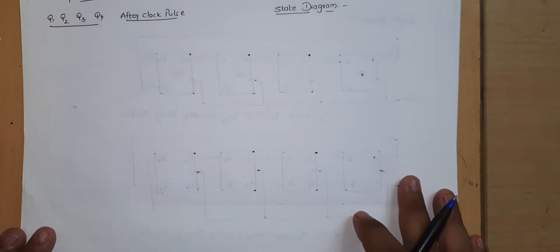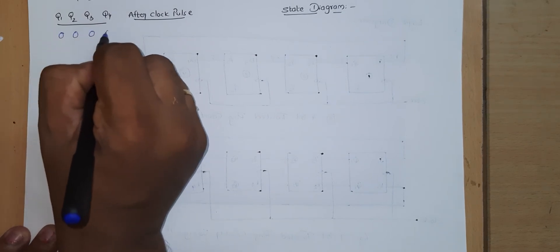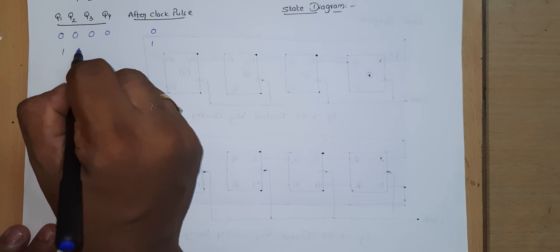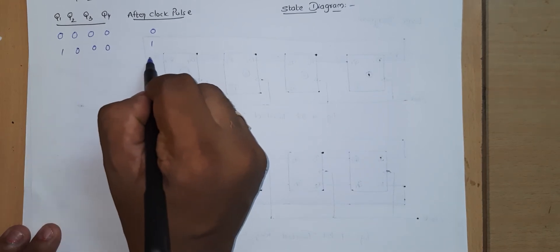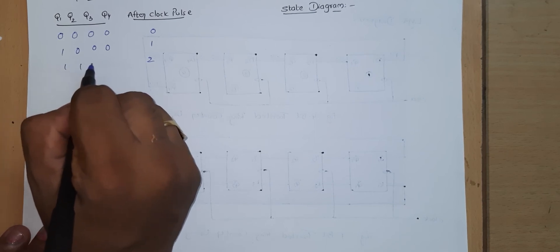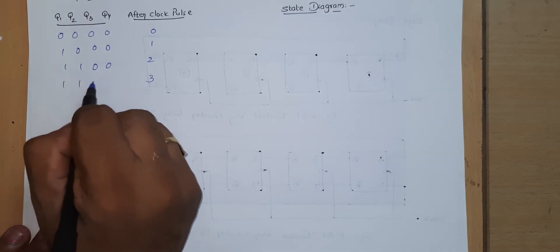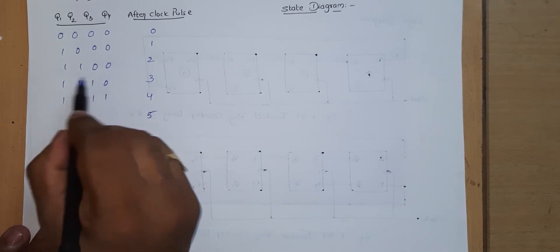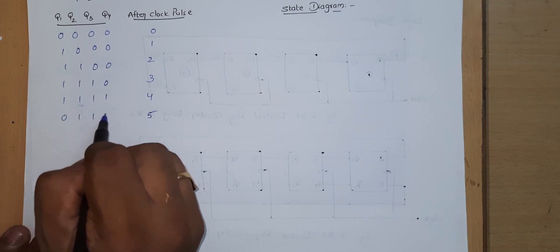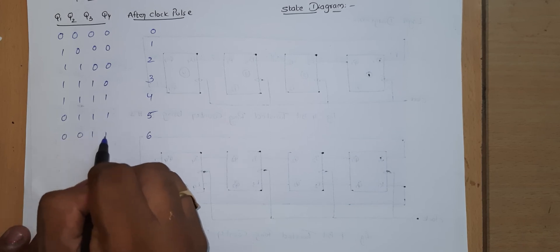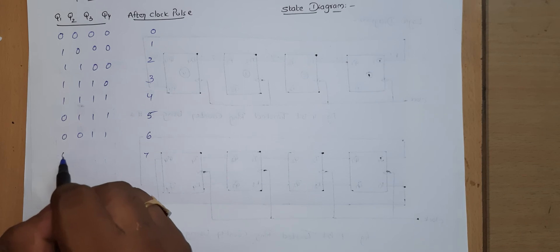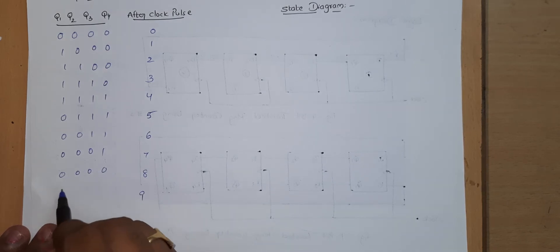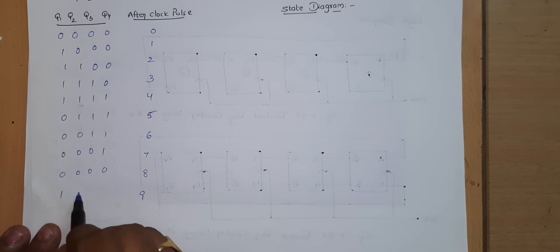Let us rewrite the sequence table. Initially at clock pulse 0: Q1=0, Q2=0, Q3=0, Q4=0. After clock pulse 1: Q1=1, Q2=0, Q3=0, Q4=0. After clock pulse 2: Q1=1, Q2=1, Q3=0, Q4=0. After clock pulse 3: Q1=1, Q2=1, Q3=1, Q4=0. After clock pulse 4: Q1=1, Q2=1, Q3=1, Q4=1. After clock pulse 5: Q1=0, Q2=1, Q3=1, Q4=1. After clock pulse 6: Q1=0, Q2=0, Q3=1, Q4=1. After clock pulse 7: Q1=0, Q2=0, Q3=0, Q4=1. After clock pulse 8: Q1=0, Q2=0, Q3=0, Q4=0. At the ninth clock pulse, Q4 is 0 so Q4-bar is 1, and Q1 becomes 1 again: Q1=1, Q2=0, Q3=0, Q4=0.